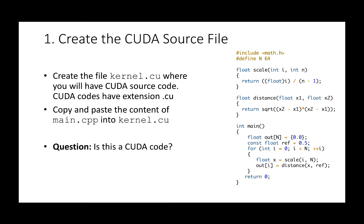The first step is to create a source file kernel.cu. In fact, CUDA codes have extension .cu. Once we have done that, we can copy and paste the content of main.cpp — the code I showed in the previous slides — into kernel.cu. So the question is: is this a CUDA code? Yes, all regular C codes are also CUDA codes that run only on the CPU.